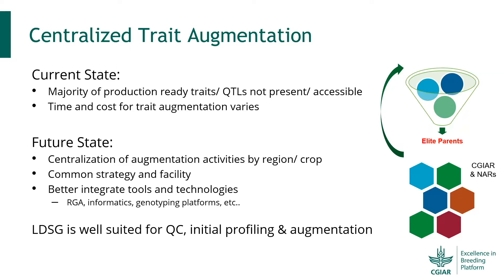Breeding programs often start with different parental materials when they want to implement GS, so we do not have a standard starting material — we're not comparing apples to apples — which really complicates the efficiency and effectiveness of breeding programs when they try to implement a mid-density solution to select. It is often providing a confounding effect on the phenotypic data, especially when it comes to stage one. Many breeding programs sometimes try to generate G-BLUPs, but then some families carry large-effect QTLs and disease resistance while others do not.